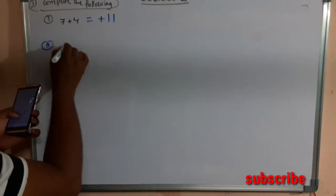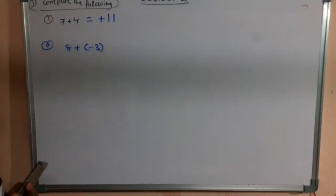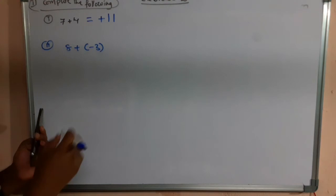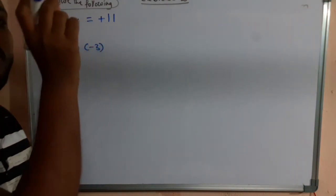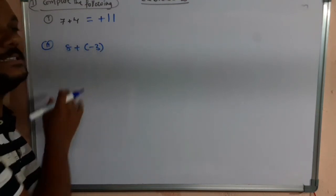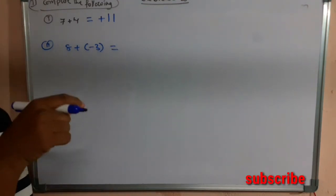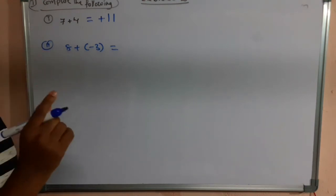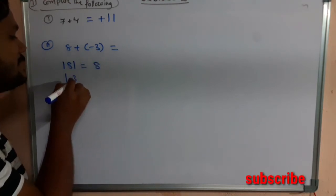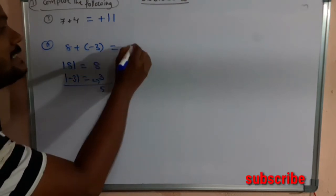The second question is 8 + (-3). These two are unlike integers — the first number is positive and the second is negative. To add unlike integers, we take the difference between their absolute values. The absolute value of 8 is 8, and the absolute value of -3 is 3. The difference between them is 5.